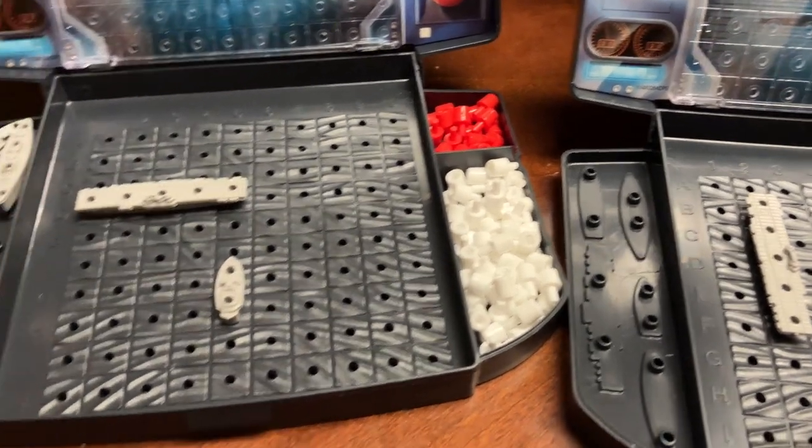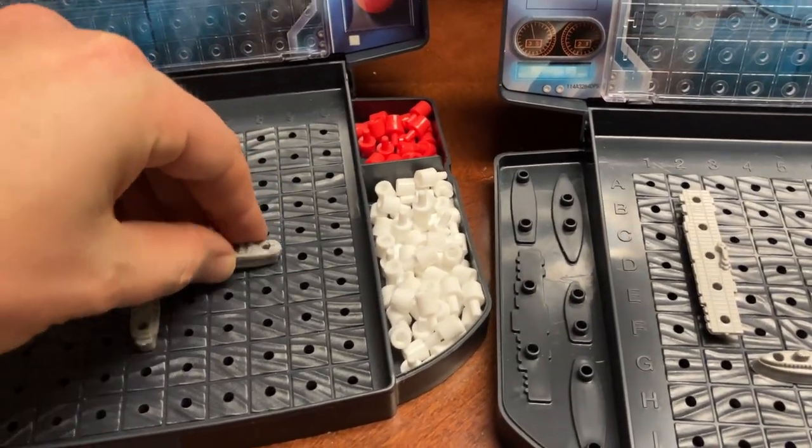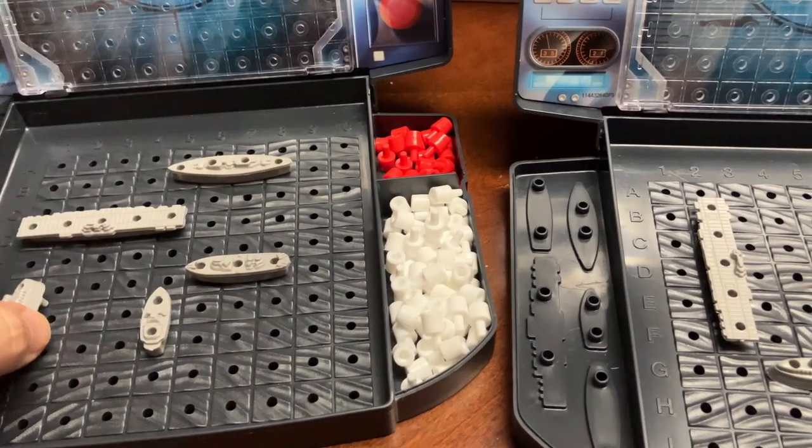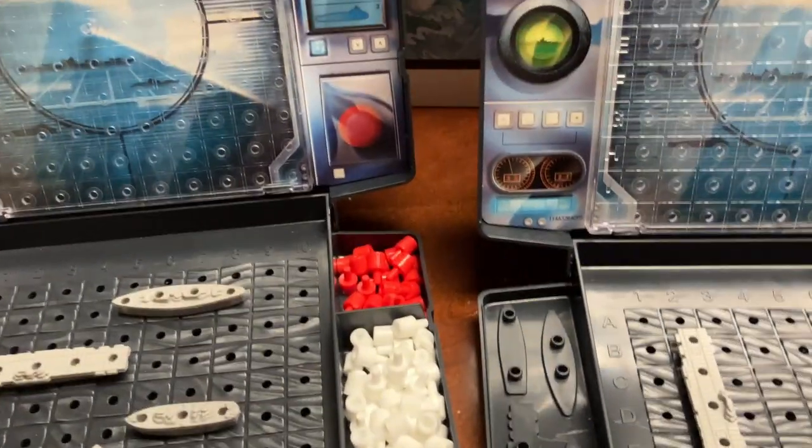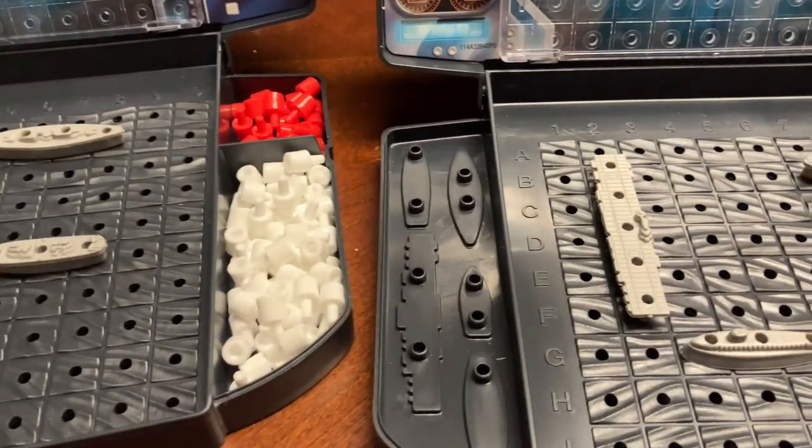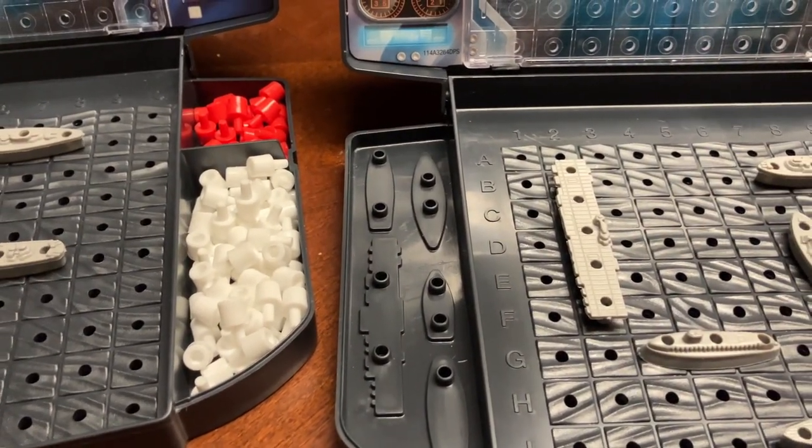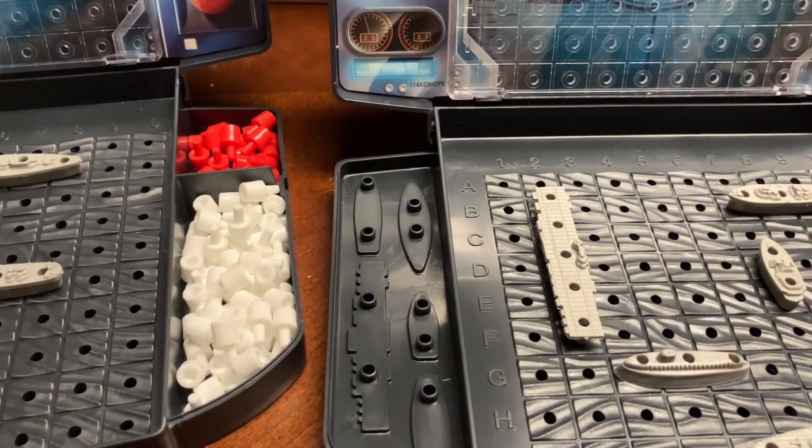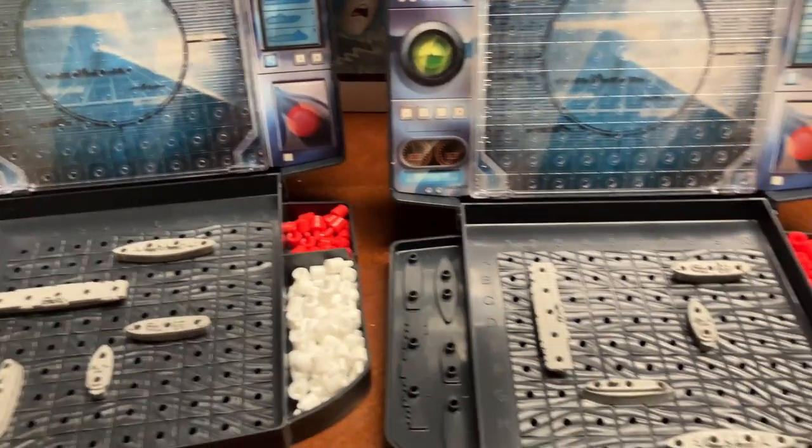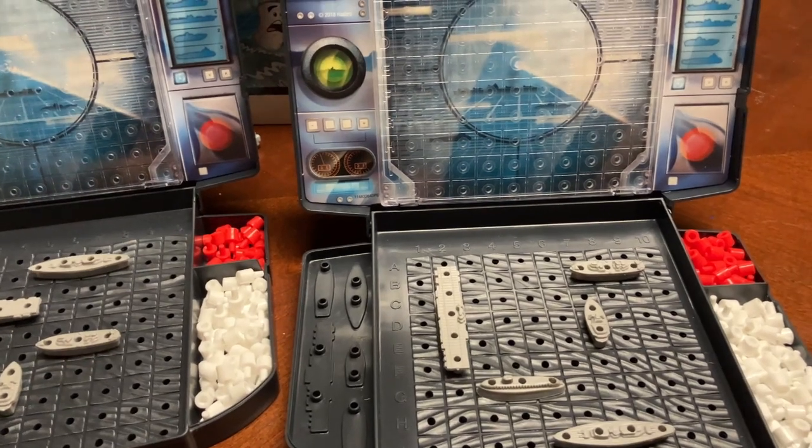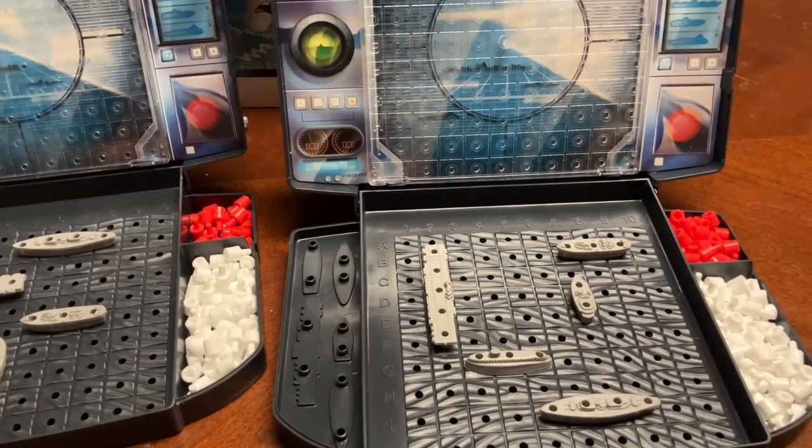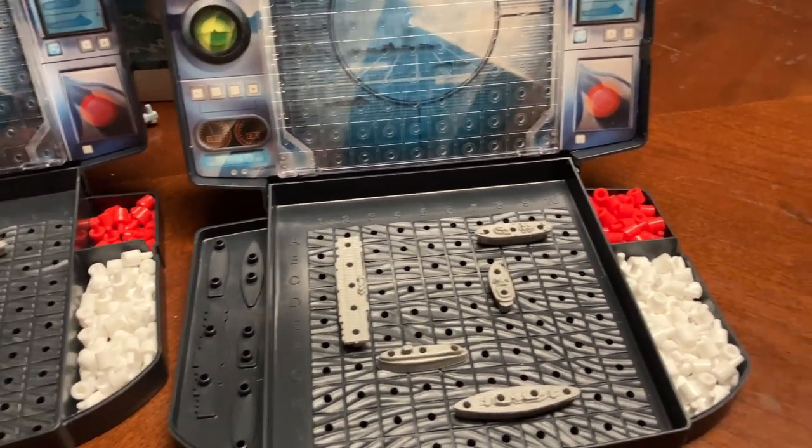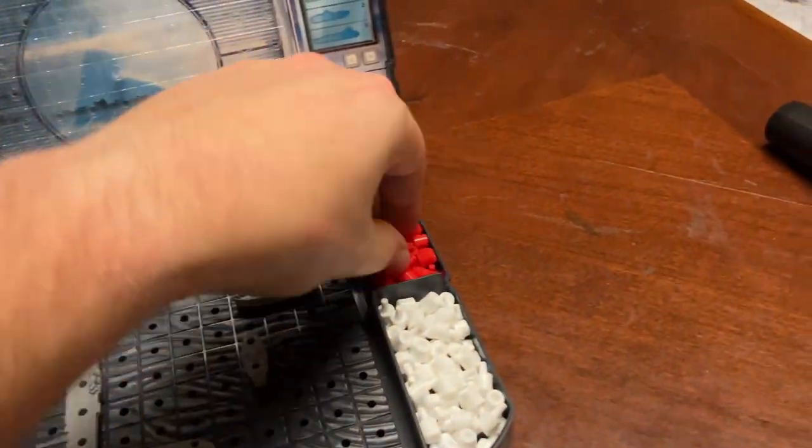All right so the game is set up once both players have set their pieces in and from there one player will fire at the opposing player. And once you do a grid hit on another ship you're going to say hit. If your attack misses the other side says miss and you keep going until all the ships have gotten hit and are sunk.